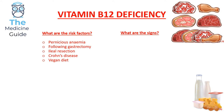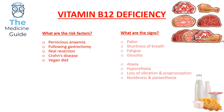Common signs found in these patients include pallor, shortness of breath, fatigue, and glossitis — a description of a very red beefy tongue. Neurological signs include ataxia, hyporeflexia, and in very severe cases, loss of vibration and proprioception, as well as numbness and paraesthesia.